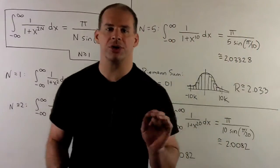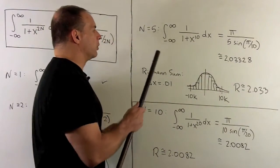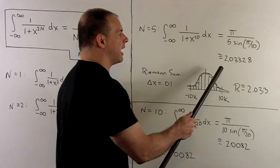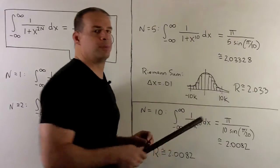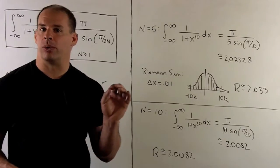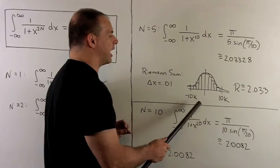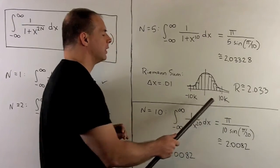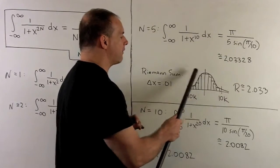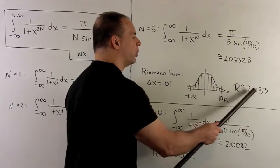Now we pick some numbers a little further out and check them with Riemann sums. For n equal to 5, we have π/5 over sine of π/10. Put that in the calculator and I get 2.03328. Going to the computer, I approximate with a Riemann sum — I'll graph the function from −10k to 10k, using rectangles with base length 0.01. Taking the sum of their areas, we get 2.033.